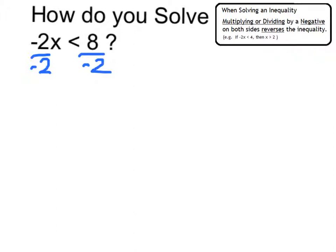So, on the left, negative 2 divided by negative 2 cancels. It's just 1, so that leaves us with x. My inequality reverses, so it's now greater than. And finally, I have 8 divided by negative 2, which is negative 4.